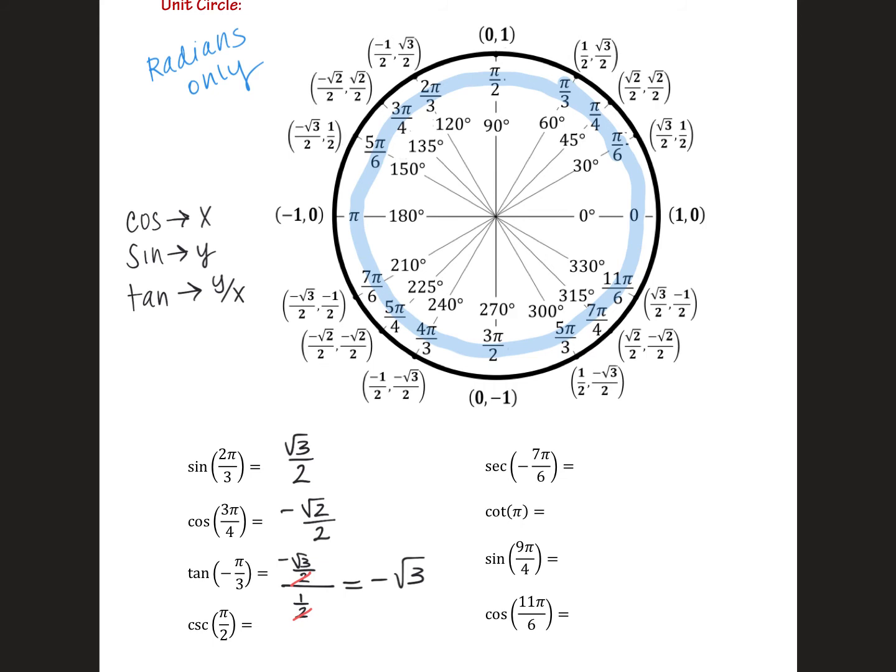Cosecant of π over 2. So π over 2 is on the y-axis at the ordered pair (0, 1). Cosecant is 1 over y. So for us, 1 over the y value, 1 over 1 is just 1.